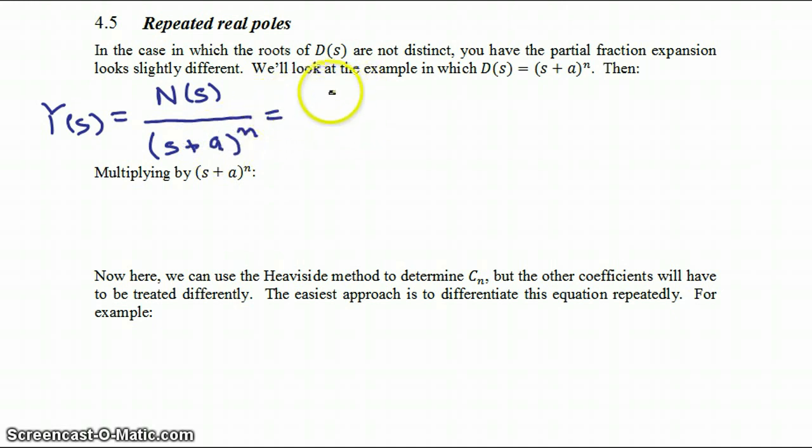Then our partial fraction expansion is going to be some coefficient C1 over s plus a to the first power, C2 over s plus a to the second power, plus dot dot dot, Cn over s plus a to the nth power.